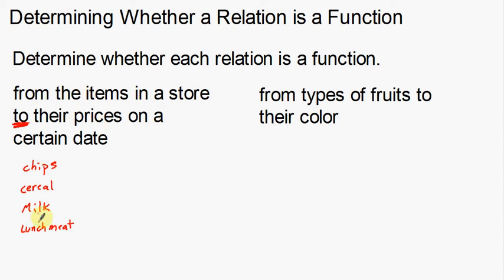So items in the store — here are the four items — and then their prices on a certain date. We say 'certain date' because some items go on sale one day. A bag of chips may be two for six dollars one day, and then $4.50 the next day back at the regular price. So we're looking at one specific day, not over the course of a week. Chips on this certain date are about $4.50.